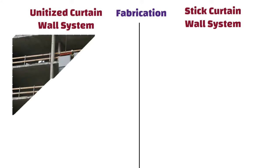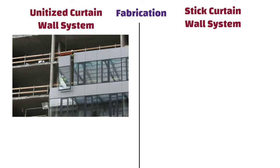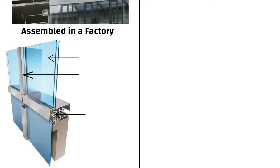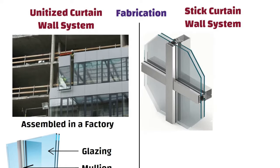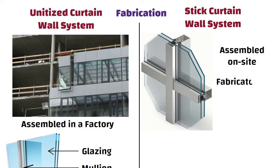Fabrication: Most of the unitized curtain wall components are assembled in a factory, including glazing, transom and mullion. On the other hand, stick curtain wall systems are typically assembled on site with individual components such as mullions and transoms, fabricated and installed piece by piece.